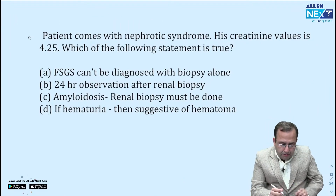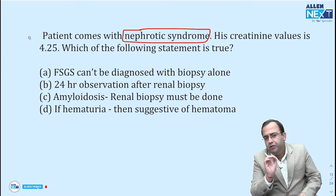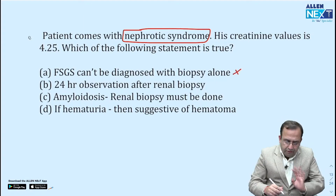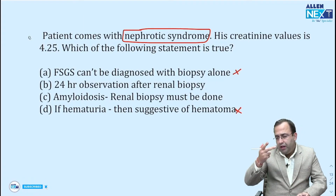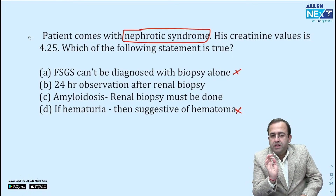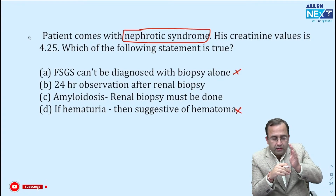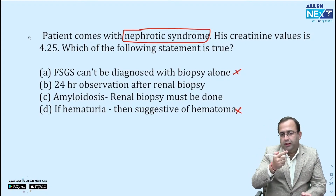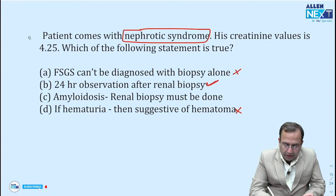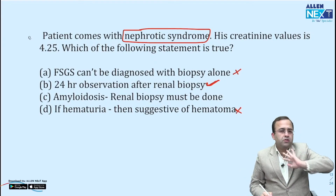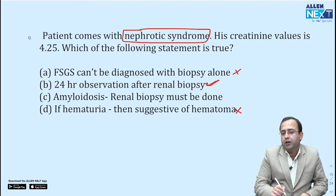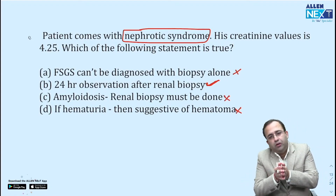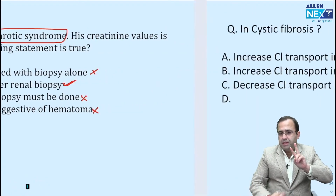This was tricky. Patient comes with nephrotic syndrome, creatinine was 4.25 — which of the following is true? FSGS cannot be diagnosed with biopsy alone — it can be diagnosed, so this is false. If hematuria is there, it is suggestive of hematoma — obviously out. There are two thought processes on observation after renal biopsy: some articles say 8-hour observation is sufficient, extended to 24 hours if there is flank pain or hematuria; others say 24-hour observation after renal biopsy is a must. Renal biopsy must be done in amyloidosis — no, this is false; it depends upon the type of amyloidosis. The best answer in this case was option B.